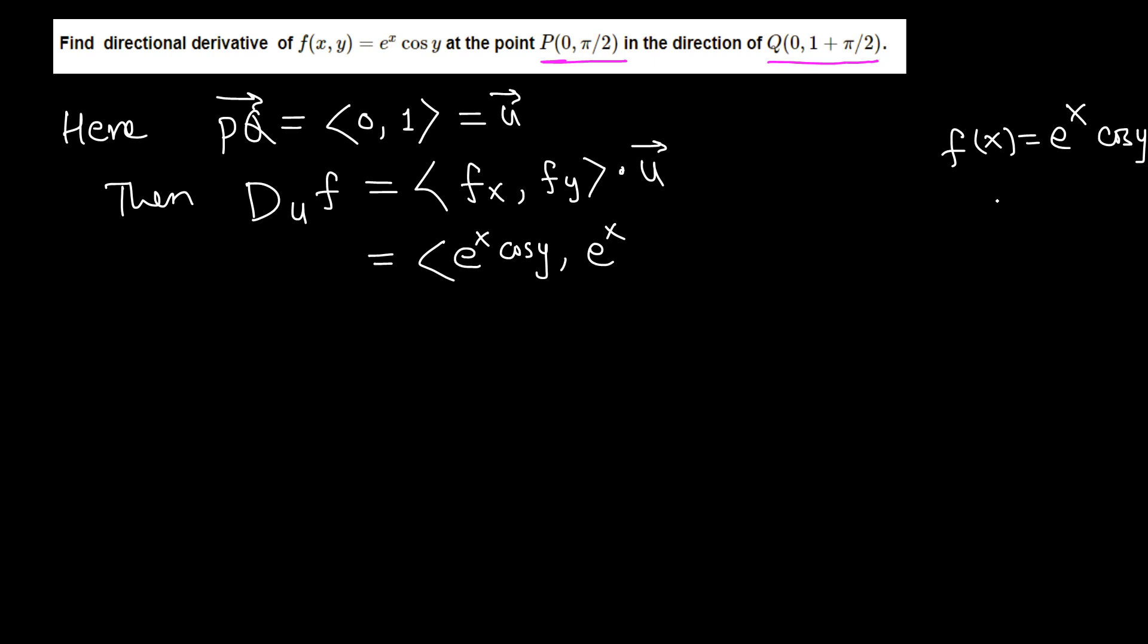Comma, let's find the derivative of this with respect to y. e^x is constant and derivative of cosine y is negative sine y. So negative e^x sine y, dot u which is (0, 1). If we multiply first component times 0, that's just 0, plus second component times 1 is just the second component: minus e^x sine y.